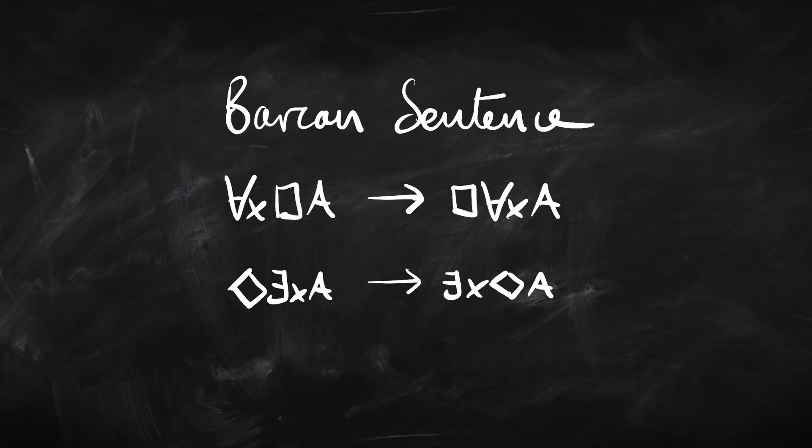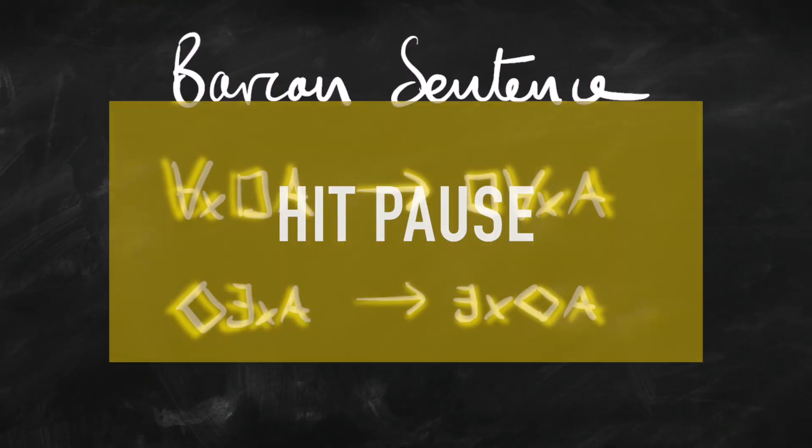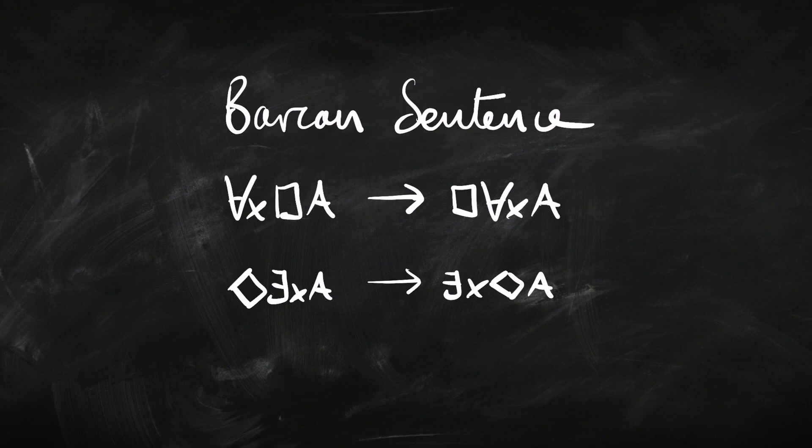If we've got both of those principles, we've got nice straightforward interaction between the first-order part and the modal part of the logic. However, the Barcan sentence and the converse Barcan sentence are philosophically contentious. To see why, let's rewrite the Barcan sentence in a slightly different way — we already know how to do that. Why don't you hit pause and see if you can come up with the alternative form? Come back, and if you get stuck, I'll show you how to do it.